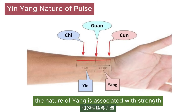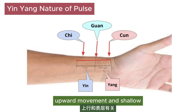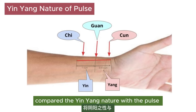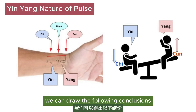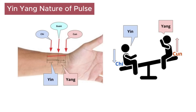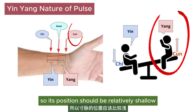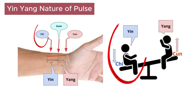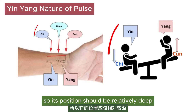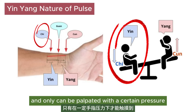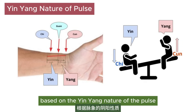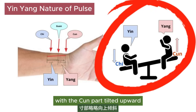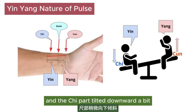We know that the nature of yang is associated with strength, upward movement, and shallow, and the nature of yin is associated with weakness, downward movement, and deep. Comparing the yin-yang nature with the pulse in chi and cun, we can draw the following conclusions in a healthy person: the cun pulse belongs to yang, so its position should be relatively shallow and can be easily palpated under light pressure. The chi pulse belongs to yin, so its position should be relatively deep and can only be palpated with a certain pressure. Based on the yin-yang nature of the pulse, in a healthy person the cun-chi pulse would be like a see-saw, with the cun part tilted upward and the chi part tilted downward a bit.